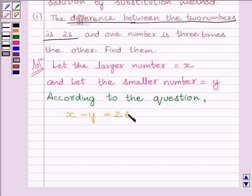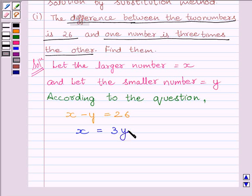The second condition given to us is one number is 3 times the other. So, second equation is x is equal to 3y. Let us name these equations as 1 and 2.